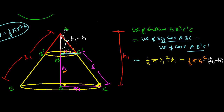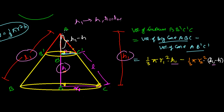Here, h1 is unknown — we imagined h1 and l1 initially. We need to express h1 in terms of known quantities. The known values are h, r1, r2, and l. If we can convert h1 into known things, then all quantities in our volume formula will be known.